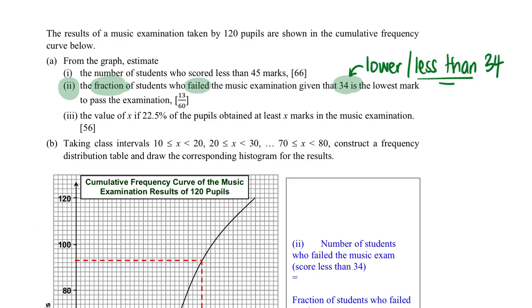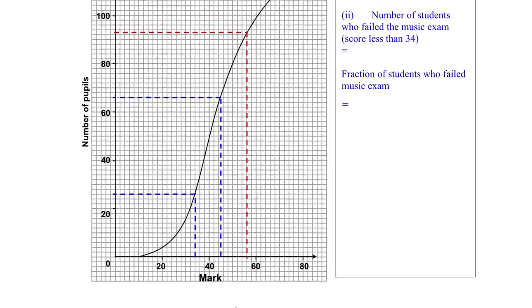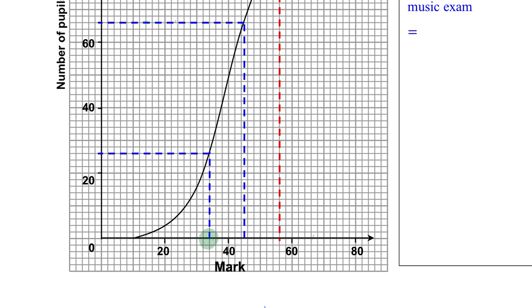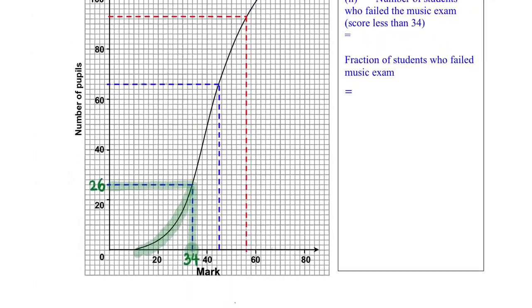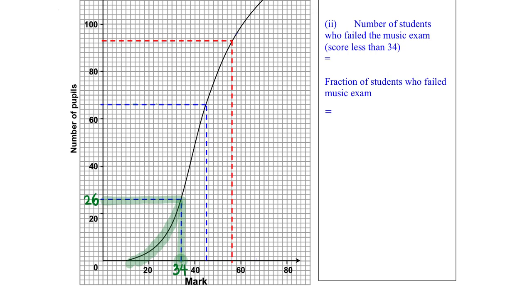We want to know the fraction, so first we must know how many students failed this exam. Coming back to the graph, I'm going to zoom in on the passing mark which is 34. From here, going up to the curve, I found that there are 26 students who scored less than 34, meaning these 26 students failed this particular music exam.